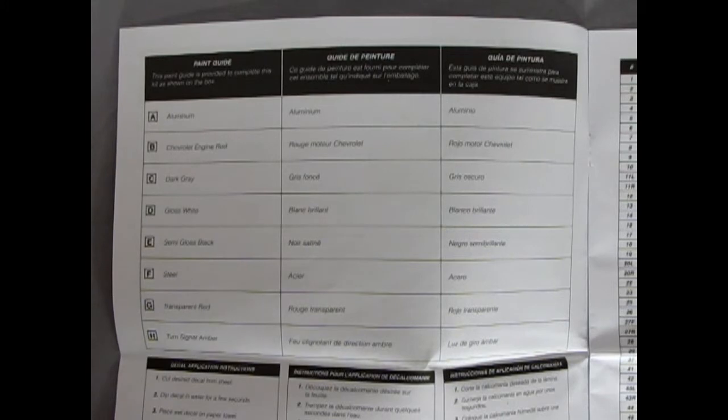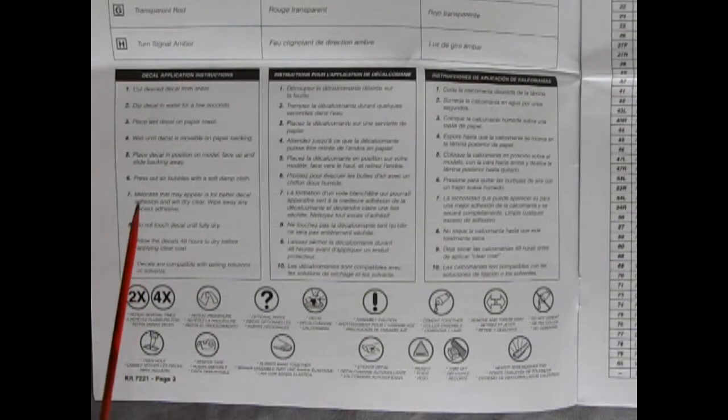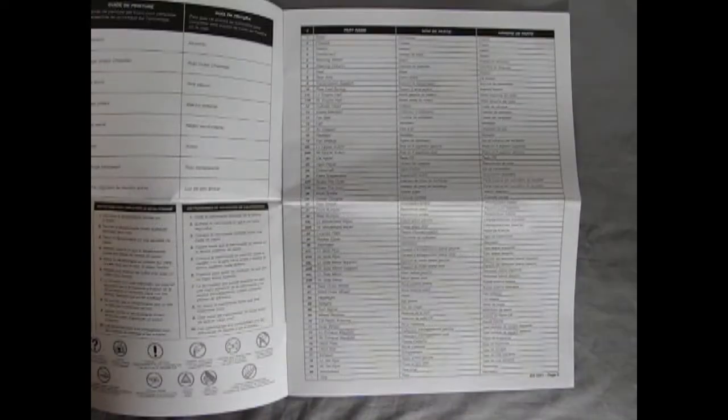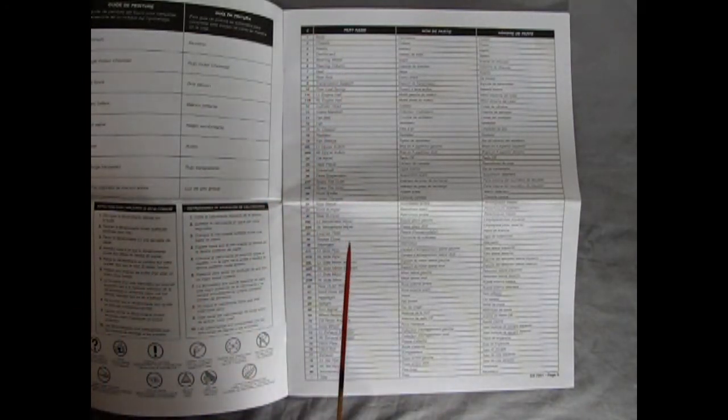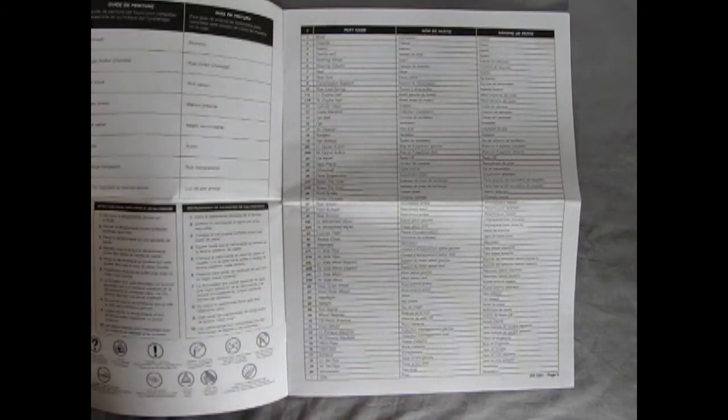Revel has also included this great big paint guide as well as instructions on our decal application and all the little symbols you will see inside the instructions. Now if you're missing any parts, Revel has this entire chart of all the parts listed so that you can contact them and let them know which is missing.